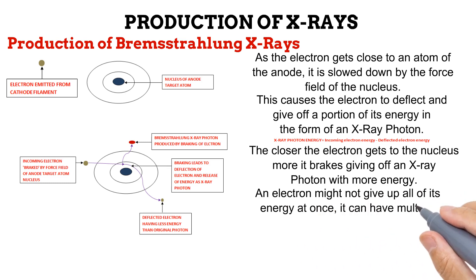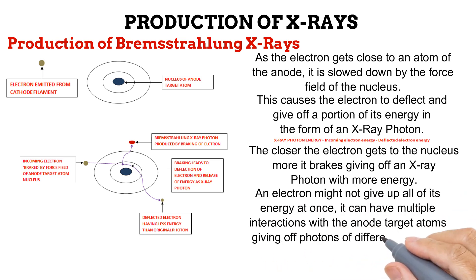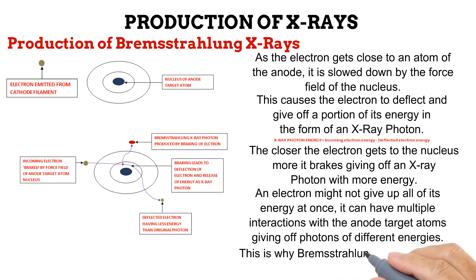An incoming electron can have multiple interactions with atoms of the anode, producing different photons of different energies. An electron can interact with an anode atom, pass far away from the nucleus, give off some of its energy as a photon, deflect out of the atom, interact with another atom, give off energy again, and so on. All this leads to photons produced by this method having different energies.